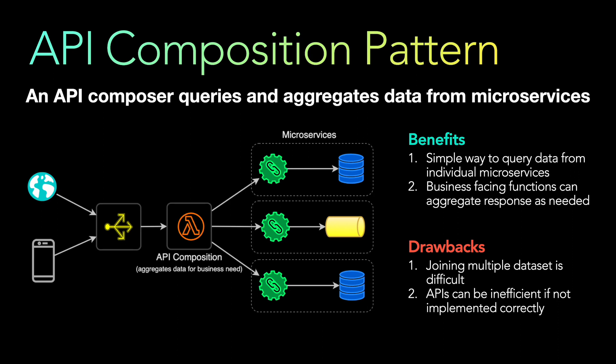Another drawback is the impact on overall system availability. Since clients call the API composition layer, which in turn calls different microservices to aggregate and return data, if any one of those microservices is unavailable the application may not fully function. Even if two out of three microservices are available, the API still cannot operate at 100 percent, which can have a reverse implication on availability.